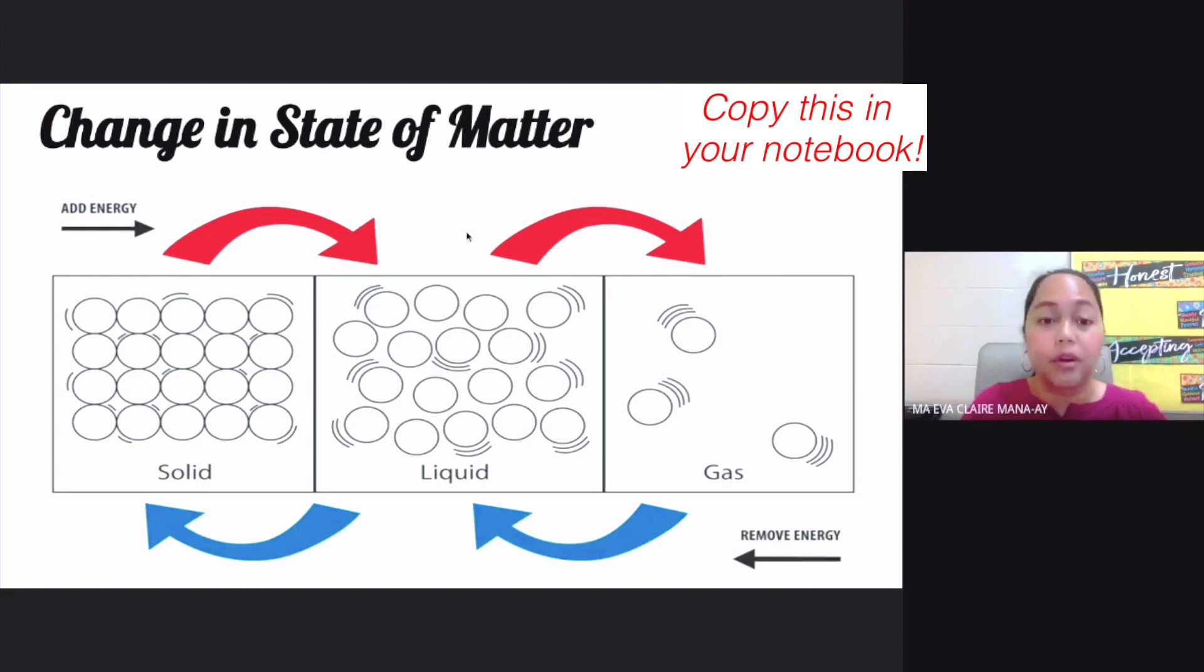One difference is in their volume. Now, your solid is a type or a state of matter that has a definite shape and definite volume. Your liquid, on the other hand, it has a definite volume, but it doesn't have a definite shape, which means that it can take the shape of its container.